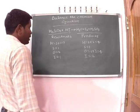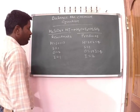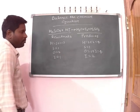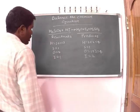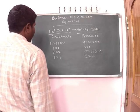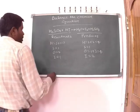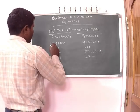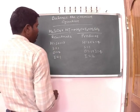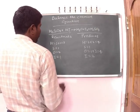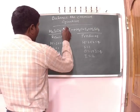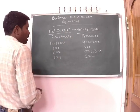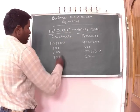So the number of atoms are not balanced on both sides. To balance the chemical equation, we need to make use of coefficients. A coefficient is a number that we place in front of a chemical formula. In this equation, we need to balance hydrogen atoms first. To do this, we need to put a coefficient of 2 in front of HI. So the number of atoms are changed.